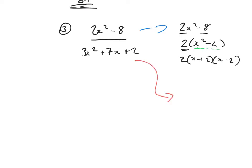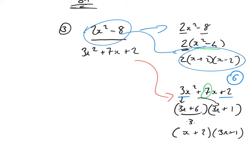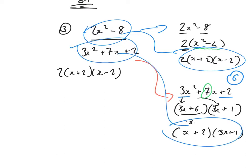Now deal with the trinomial on the bottom: 3x squared plus 7x plus 2. 3 times 2 is 6. Two numbers that multiply to give 6 and add to give 7 — that's 6 and 1. Drop 3x into both brackets. The first bracket: take out a common factor of 3 — 3 into 3x goes x and 3 into 6 goes 2. The second bracket: 3x plus 1. The top factorised to give 2 bracket x plus 2 bracket x minus 2, and the bottom factorised to give x plus 2 bracket 3x plus 1.